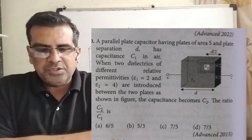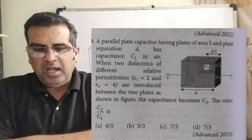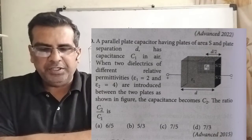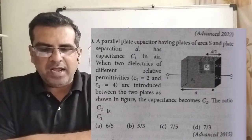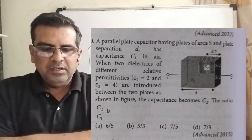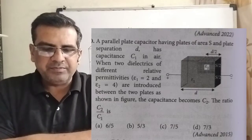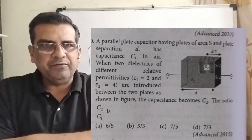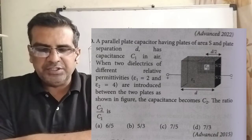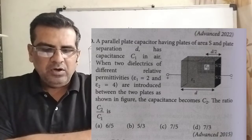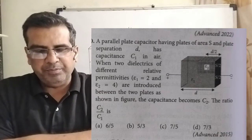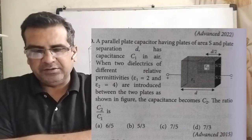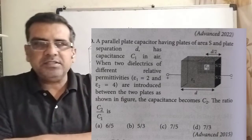Now here is the question: a parallel plate capacitor having plate area S and plate separation d has capacitance C1 in air. When two dielectrics of different relative permittivities — epsilon 1 equal to 2 and epsilon 2 equal to 4 — are introduced between the two plates as shown in the figure, the capacitance becomes C2. The ratio C2 to C1 is: option A — 6 by 5, option B — 5 by 3, option C — 7 by 5, option D — 7 by 3. This question was asked in JEE Advanced 2015.